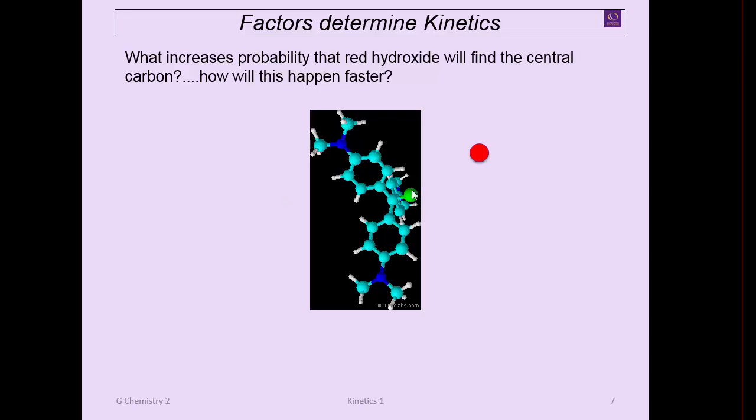Let's talk about how we can make this happen faster—the probability that this red finds that carbon and finds it in the right orientation. It has to come into the right orientation, and it has to be going with enough energy because the energy of both these molecules is such that it actually makes this whole structure invert and gets within the covalent radius so that a new bond is formed. That's a lot of important factors.